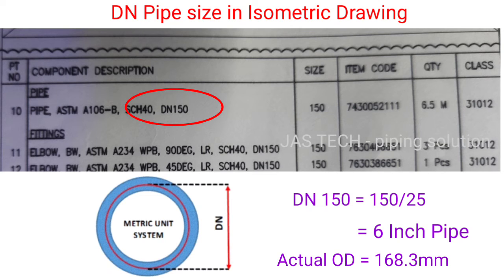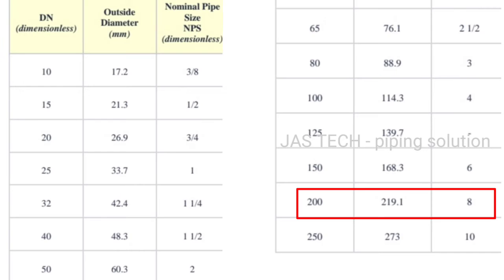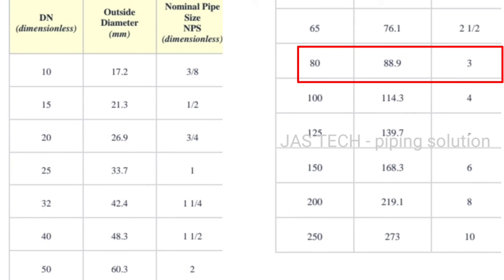A 6 inch pipe has an actual OD of 168.3 mm. One more example: DN 200 means NPS size 8 inch, with an actual outside diameter of 219.1 mm. Note: 3 inch NPS means 80 mm, not 75 mm, with an actual OD of 88.9 mm.